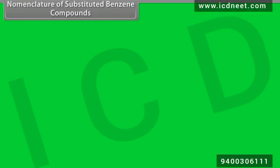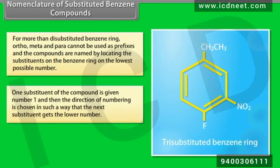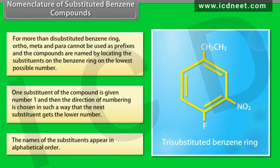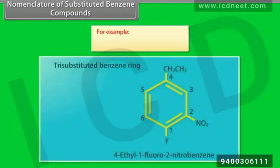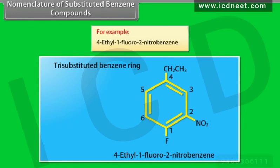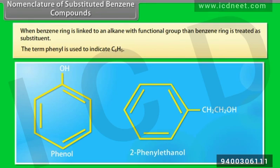For more than two substituents on a benzene ring, ortho, meta, and para cannot be used. The compounds are named by locating substituents with the lowest possible numbers: one substituent is given number 1, then the direction of numbering is chosen so the next substituent gets the lower number, and substituents appear in alphabetical order. For example, assigning number 1 to fluorine gives nitro at position 2 and ethyl at position 4: 4-ethyl-1-fluoro-2-nitrobenzene. When benzene is linked to an alkane with a functional group, the benzene ring is treated as a substituent, denoted 'phenyl' (C6H5).